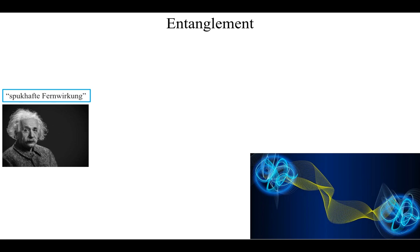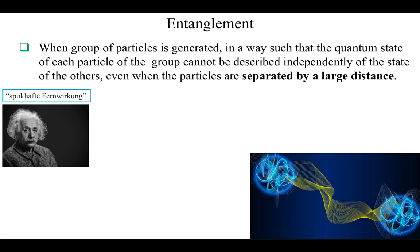The next concept is entanglement, or as Einstein described it, spooky action at a distance. Quantum entanglement is the physical phenomenon that occurs when a group of particles is generated in such a way that the quantum state of each particle cannot be described independently of the state of the others, even when the particles are separated by a large distance.